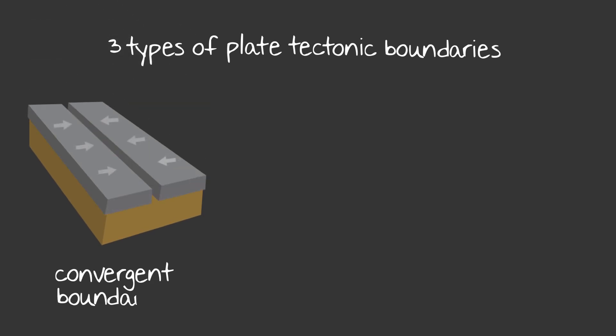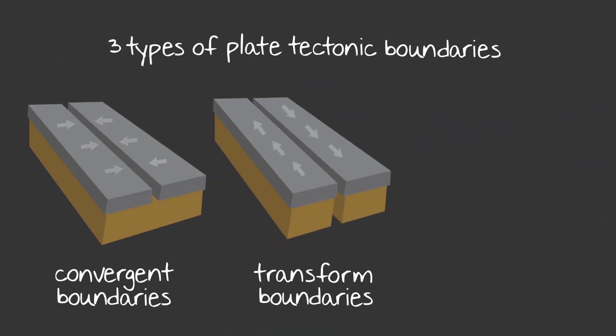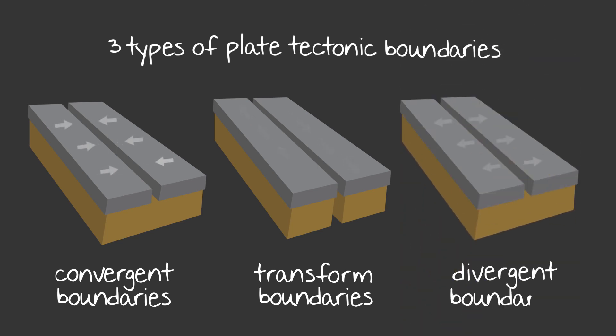Convergent boundaries occur when two plates are moving towards one another. Transform boundaries occur when two plates are sliding past one another. And divergent boundaries occur when two plates are moving away from one another. Let's take a closer look at what happens in each of these boundaries.